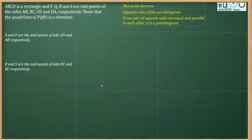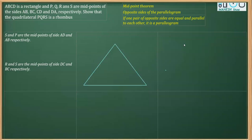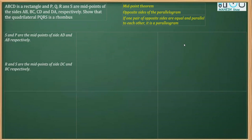Before we do this question, let's recall the midpoint theorem. It says that in a triangle ABC, if a line is drawn joining P, the midpoint of AB, and Q, the midpoint of AC, then PQ is parallel to BC and the length of PQ is half of BC. We are going to use this midpoint theorem to solve this question.